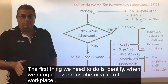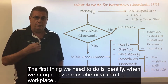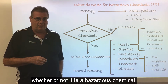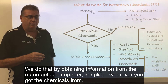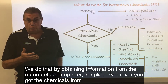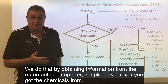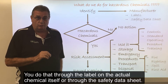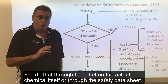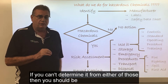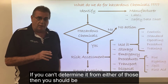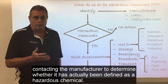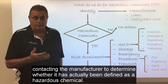The first thing we need to do is identify, when we bring a hazardous chemical into the workplace, whether or not it is a hazardous chemical. We do that by obtaining information from the manufacturer, importer, or supplier — wherever you got the chemicals from — through the label on the actual chemical itself or through the safety data sheet. If you can't determine it from either of those, you should be contacting the manufacturer to determine whether it is a hazardous chemical or has been defined as a hazardous chemical.